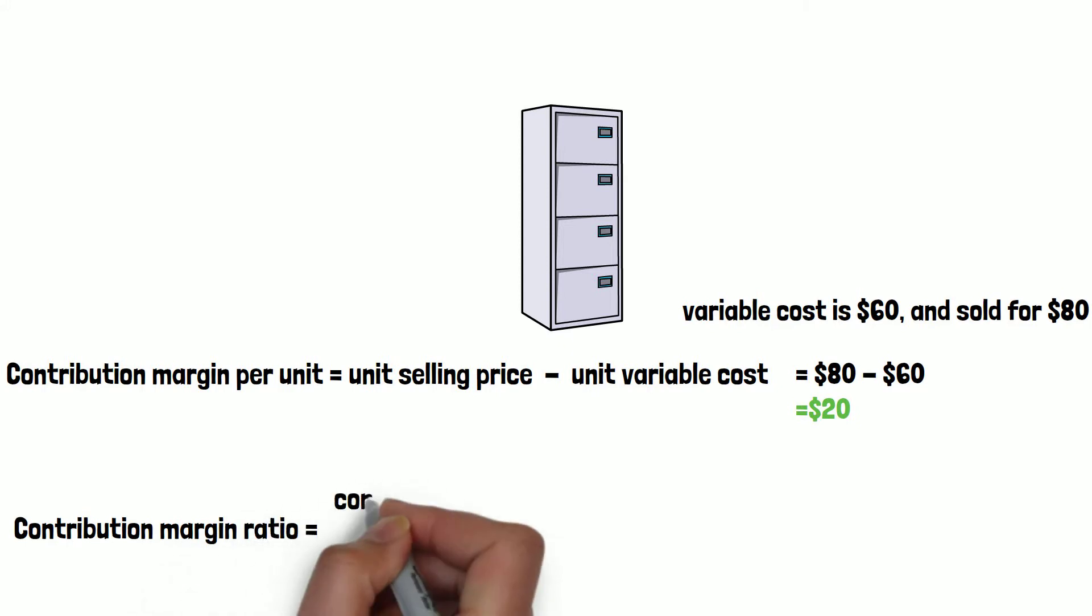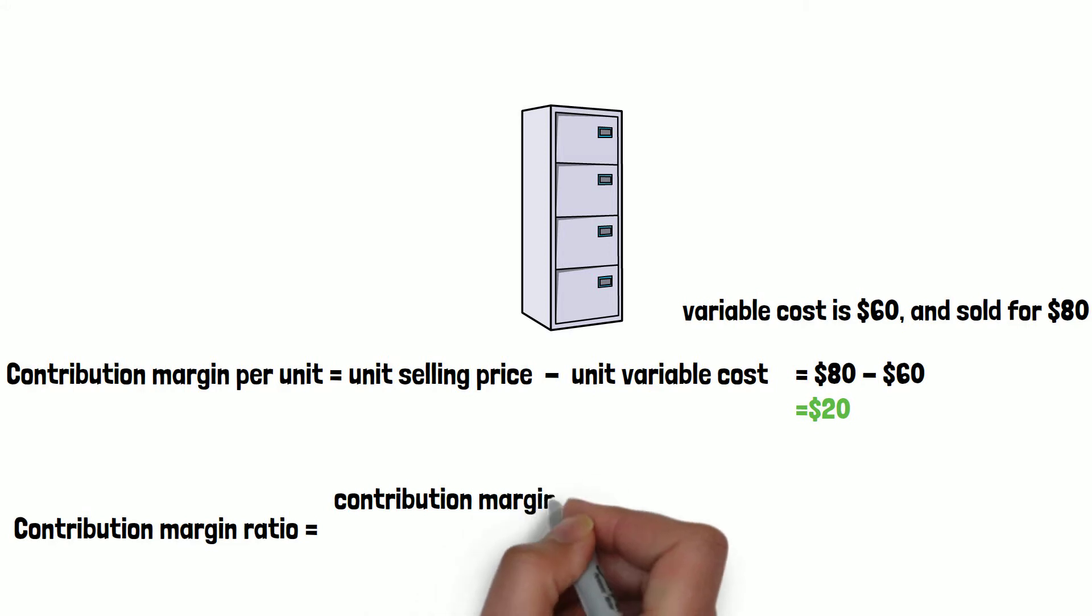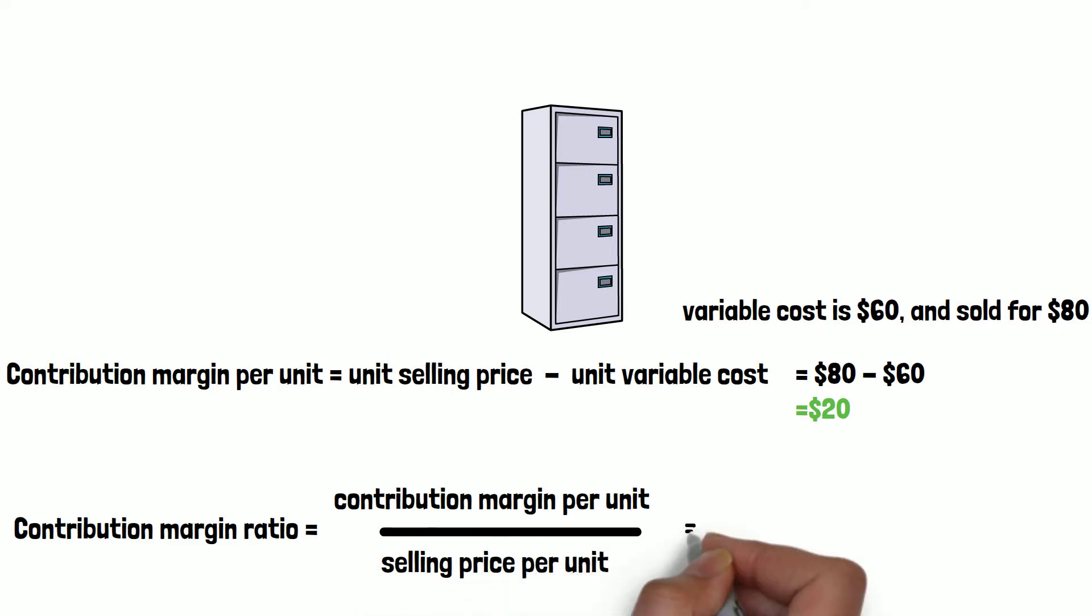Contribution margin ratio is calculated by contribution margin per unit divided by the unit selling price. So that equals, in this case, $20 contribution margin per unit divided by the selling price per unit, which is the $80. So $20 divided by $80, that's one-fourth, 25%.